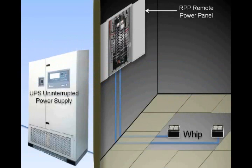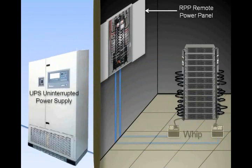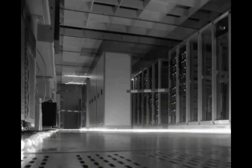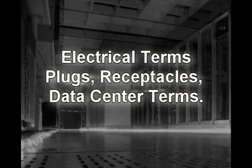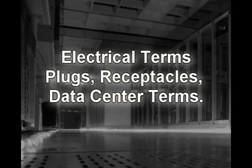Looking at the power chain from the IT equipment perspective, the IT equipment can plug directly into the outlets on a whip, but usually plugs into the receptacles on a rack PDU. The plug from the rack PDU, also known as the input plug, connects to a power source such as a UPS or an outlet on a whip. The whip connects to breakers on the RPP. Now you should have a working basic knowledge of electrical terms, plugs, and receptacle types, and data center terminology. Please click on the next video in this series, How to Select a Rack PDU for your data center, which discusses configuration options and which factors will impact what rack PDUs are best for your data center. Thanks for viewing this video.